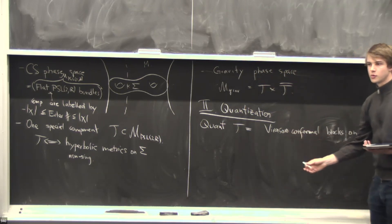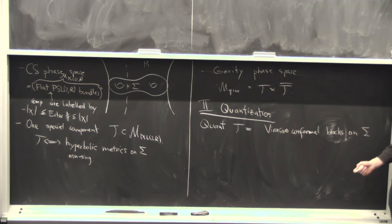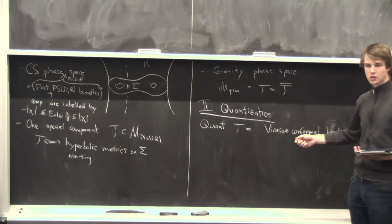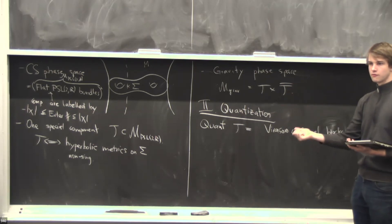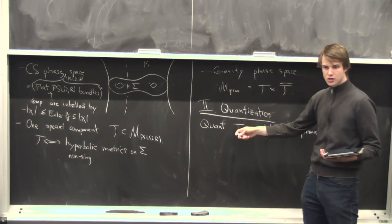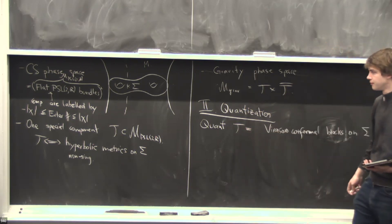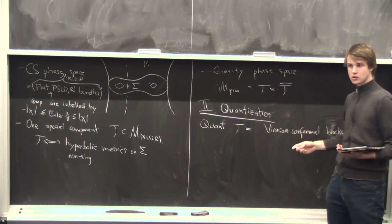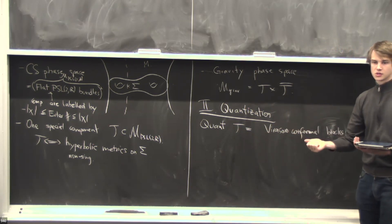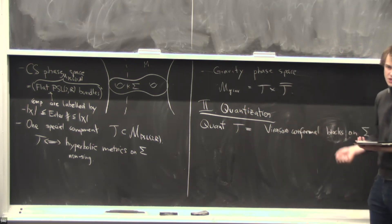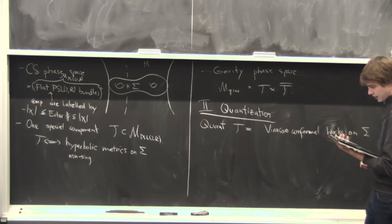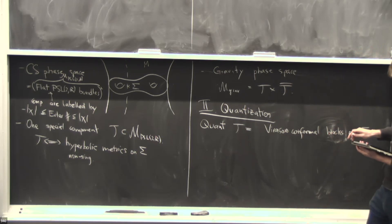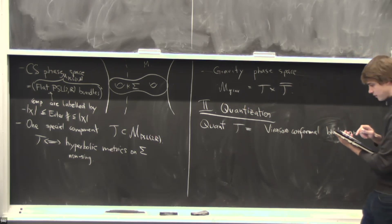A Virasoro conformal block depends on the complex structure of the surface but is not crossing-symmetric — for instance, an S-channel block on a four-punctured sphere is not crossing-symmetric, so it's a function on the universal cover of moduli space, which is Teichmüller space. The conformal anomaly means it's a section of a line bundle rather than a function. This was first suggested by Verlinde, then made precise in the math literature by Kashaev and later by Teschner around 2002-2005.